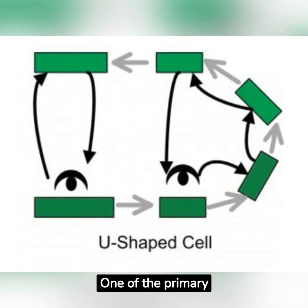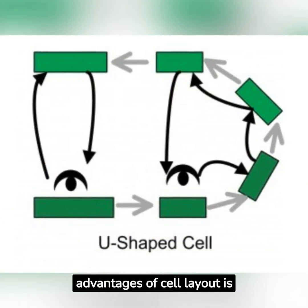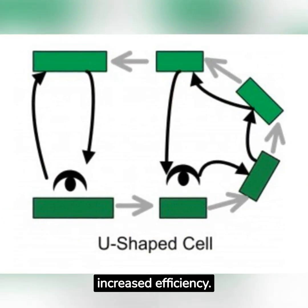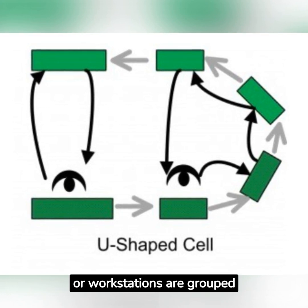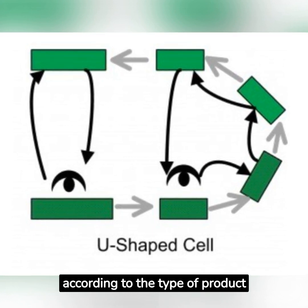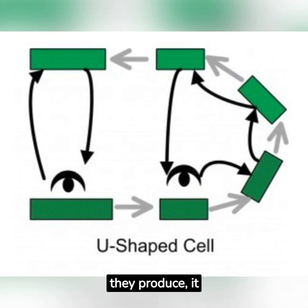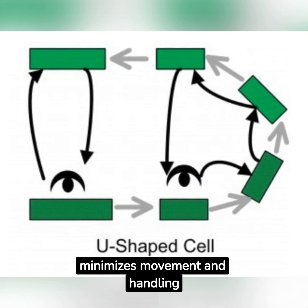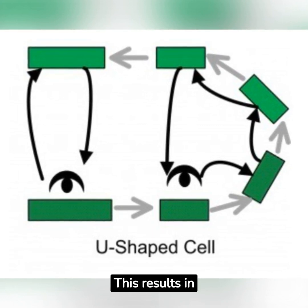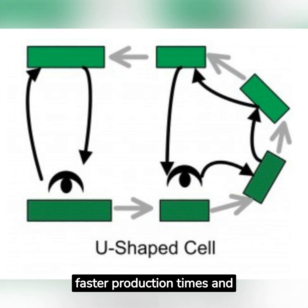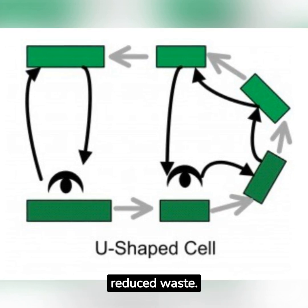One of the primary advantages of cell layout is increased efficiency. Since machines or workstations are grouped according to the type of product they produce, it minimizes movement and handling of materials. This results in faster production times and reduced waste.